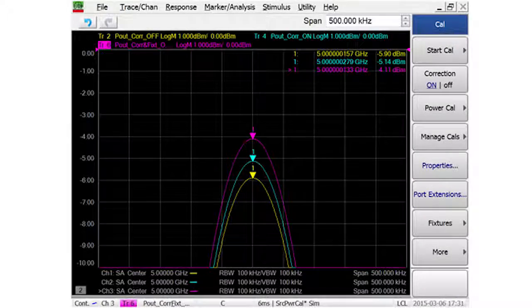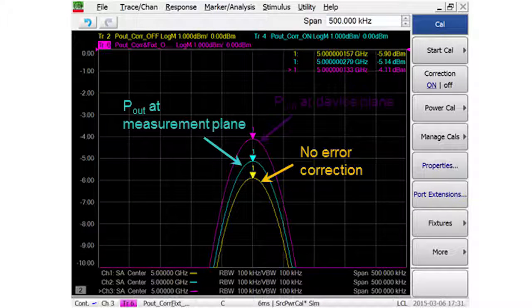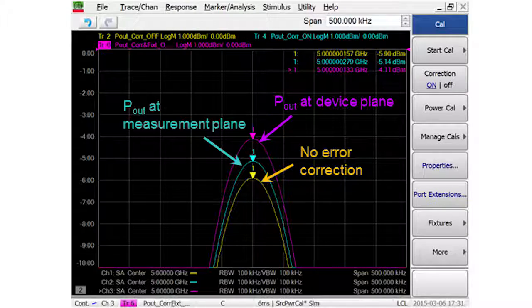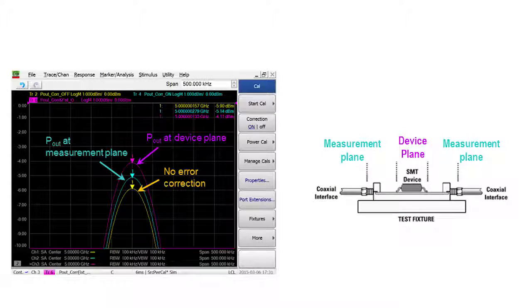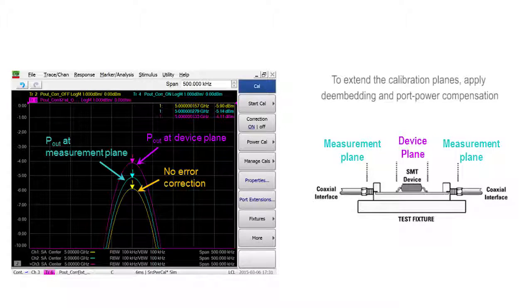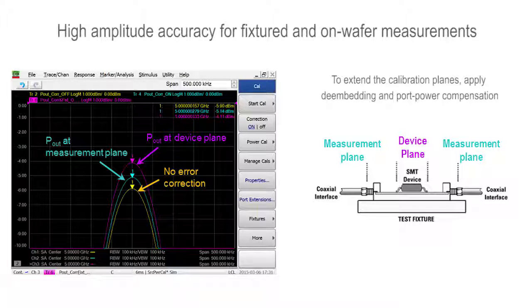All of the spectrum analysis measurements can be performed with calibration, which removes cable losses and corrects the frequency responses of the measurement receivers. If the measurement is performed on a device in a fixture or measured on wafer, de-embedding and port power compensation can be applied to extend the calibration planes directly to the input and output pins or pads of the device. All of this gives high levels of amplitude accuracy when measuring spurious signals, ensuring you know exactly how your converter is performing.